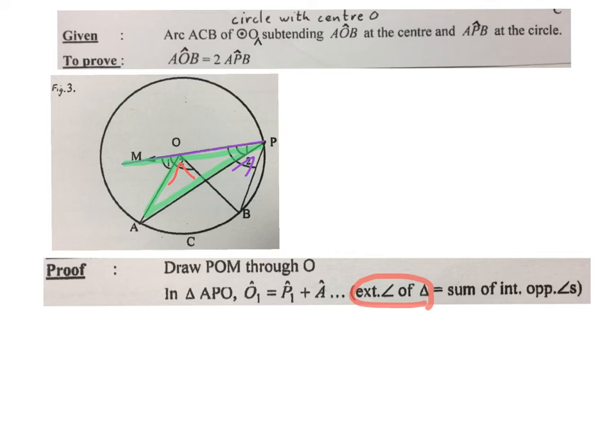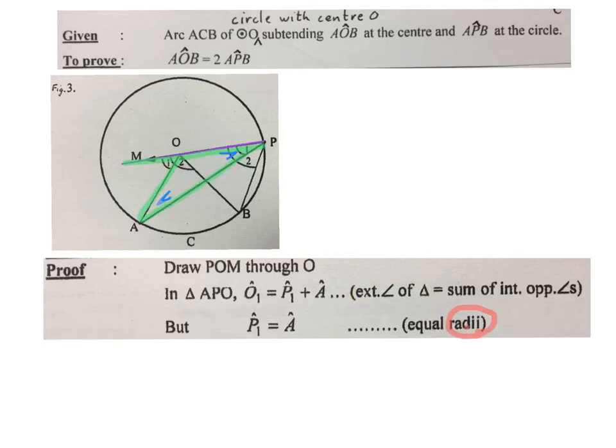Exterior angles of a triangle. Then we know that P1 is equal to A, the two blue ones I indicated there, because they're opposite the radii, same as the previous one. So, O1 is again twice as big as P1.